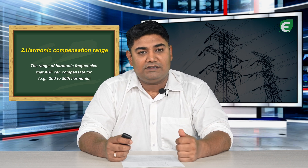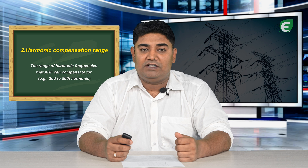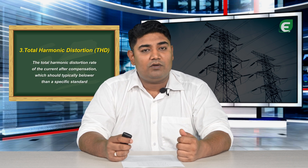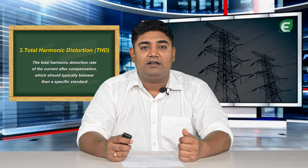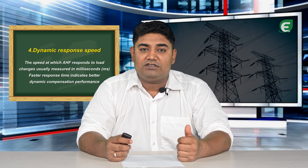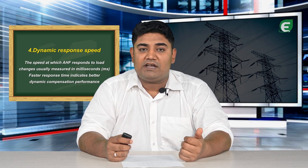Harmonic compensation range is the range of harmonic frequencies that AHF can compensate for. The total harmonic distortion rate of the current after compensation should typically be lower than a specific standard. The dynamic response speed is the speed at which the AHF responds to load changes, usually measured in milliseconds — a faster response time indicates better dynamic compensation.